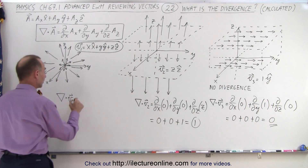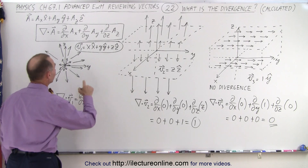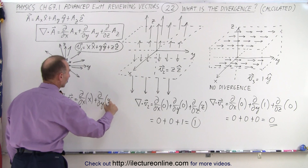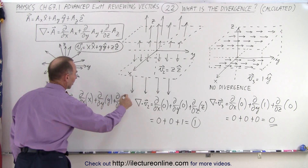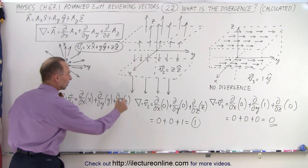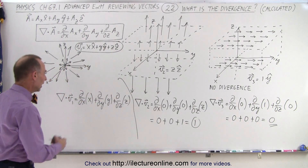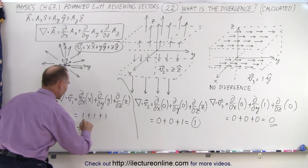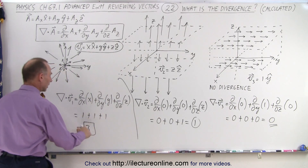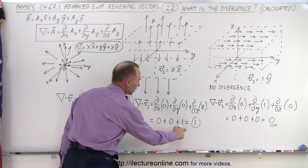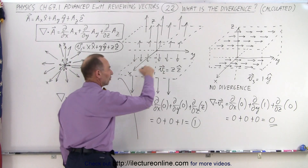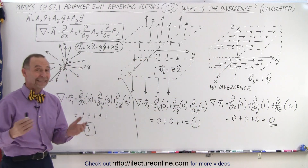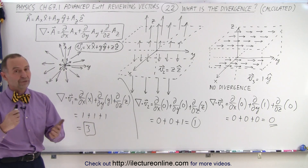For the first function, we have the partial derivative with respect to x of the x component, which is x, plus the partial derivative with respect to y of the y component, plus the partial derivative with respect to z of the z component. This equals 1 plus 1 plus 1, which is 3. So there is a bigger divergence with this vector function, a medium divergence with the second, and no divergence for the constant vector function. And that's how we calculate the divergence of different functions.